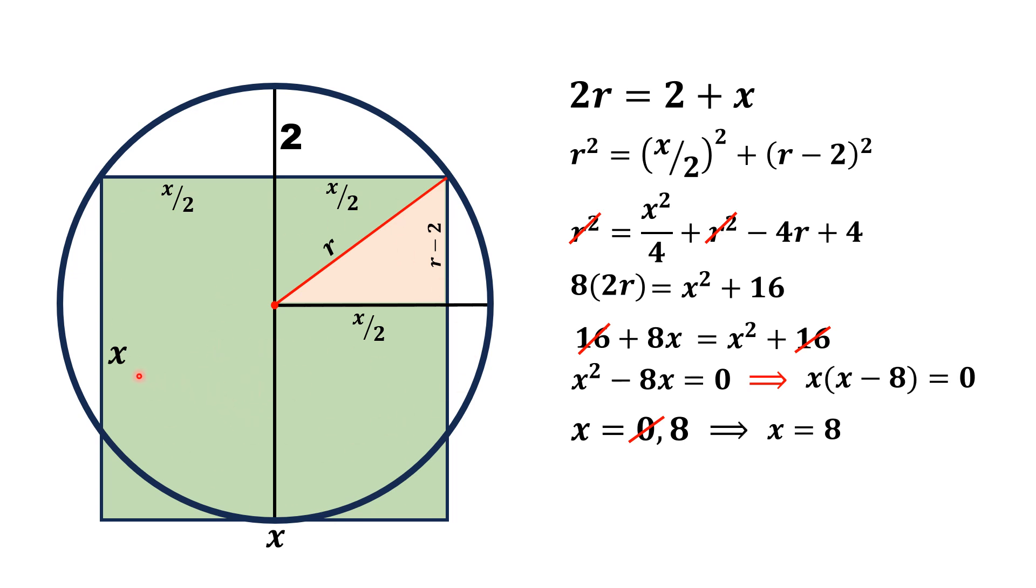So area of a square is equal to the square of its side. So it will be equal to 8², and thus the area of this whole square is equal to 64 square units. That is the answer. Thank you for watching.